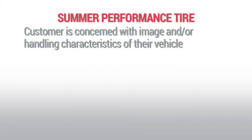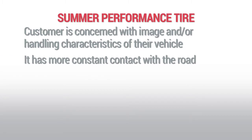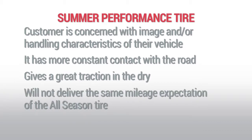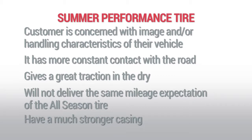The summer performance tire caters to a customer concerned with image or the handling characteristics of the vehicle. This tire has fewer sipes, giving it more constant contact with the road. With a continuous center rib it delivers great traction. It often starts with a lower tread depth or softer compound, so it may not deliver the same mileage as an all-season tire. Performance tires also often have a stronger casing, which provides better braking power and cornering ability.